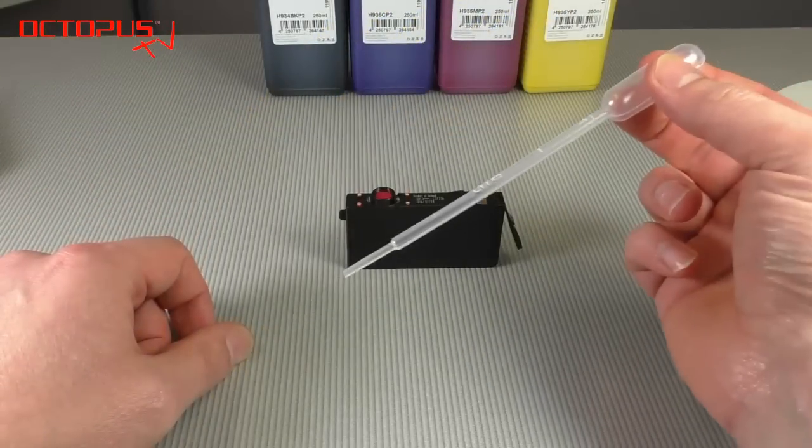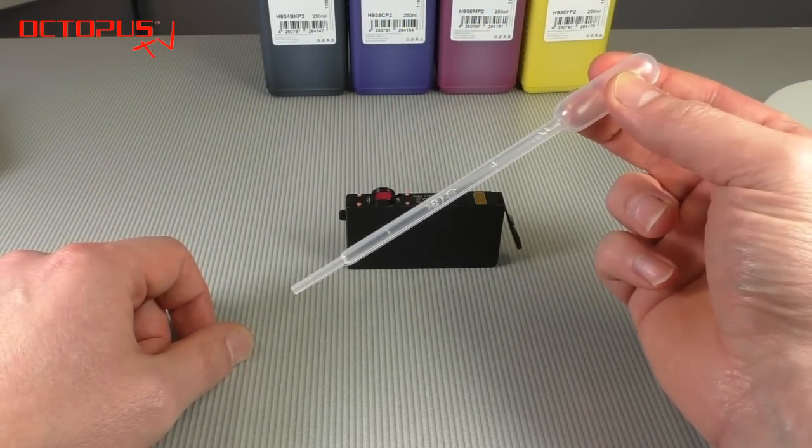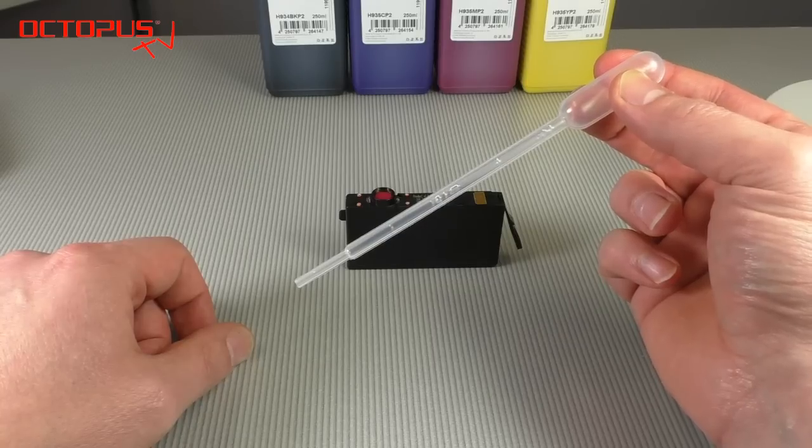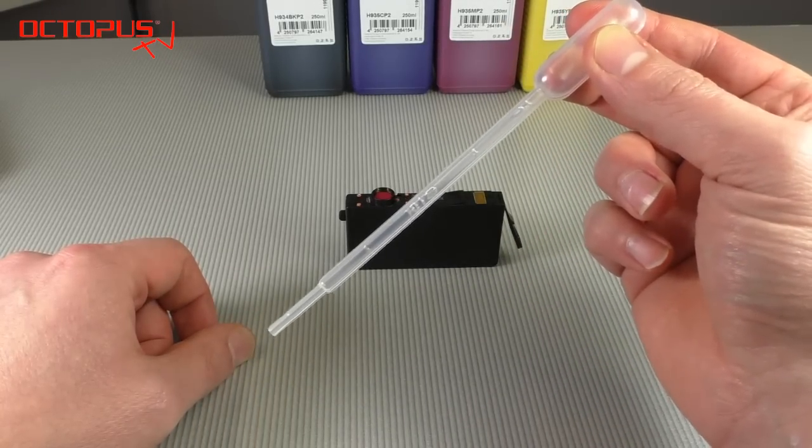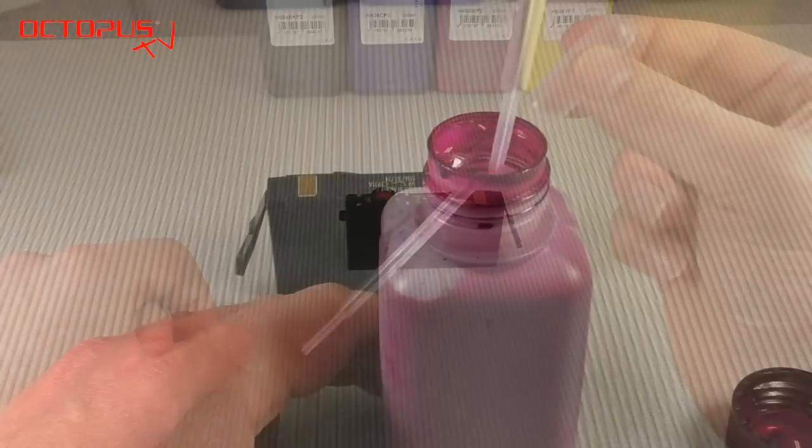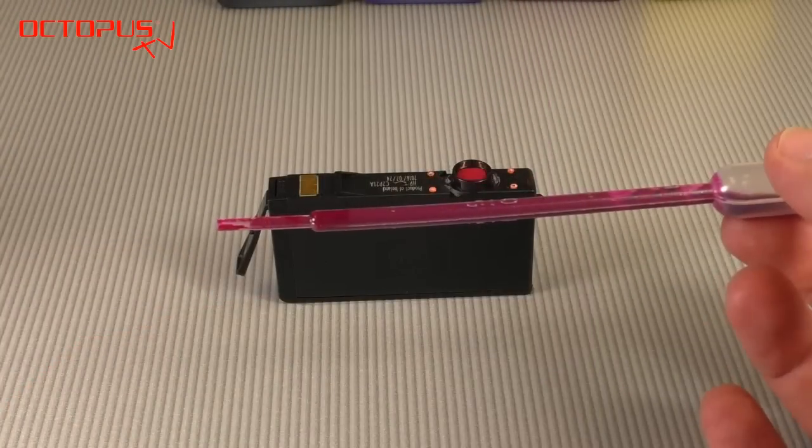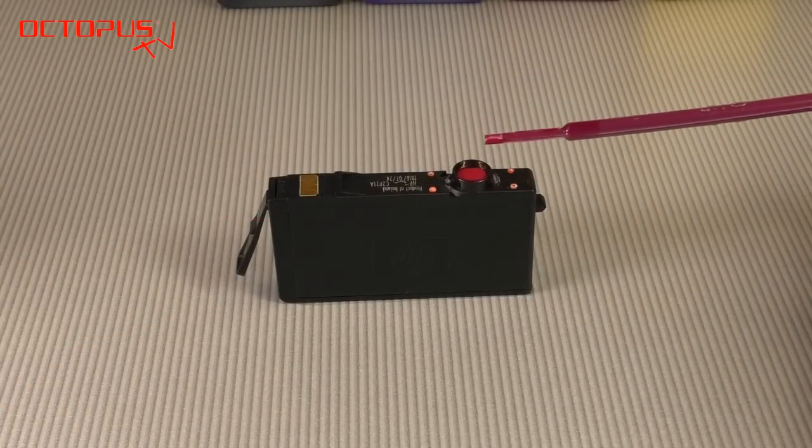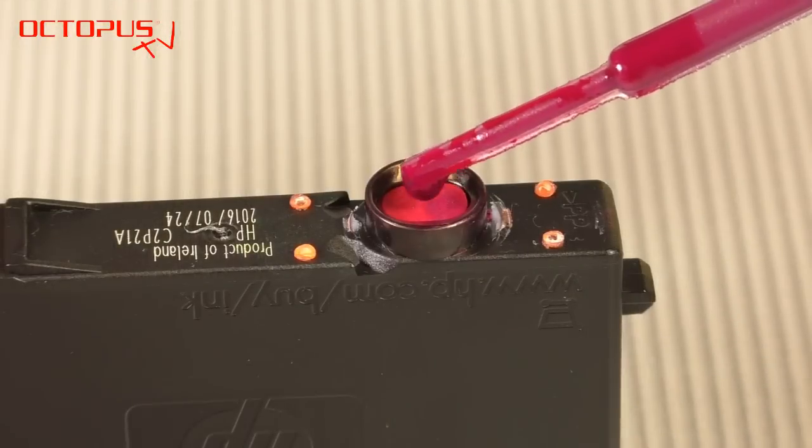The pipette that we are using in our refill tutorial here can take in a volume up to 1 ml. So we are planning to fill that pipette 5 times to get 1 ml into the cartridge with each filling. We take the magenta refill ink into our pipette and start to drip it drop by drop on the sponge material in the ink port.